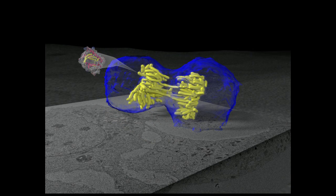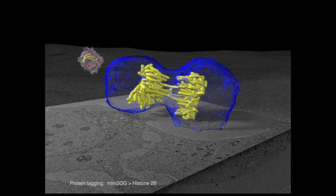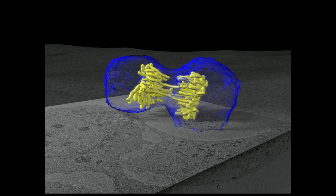In this case, mini-SOG is associated with the DNA binding protein histone 2b, thus allowing us to mark the DNA of the chromosomes.